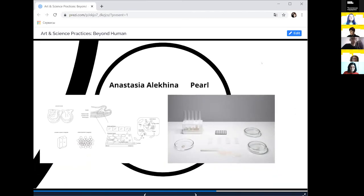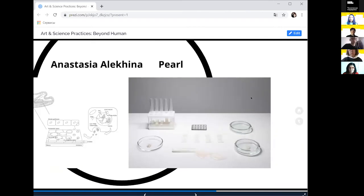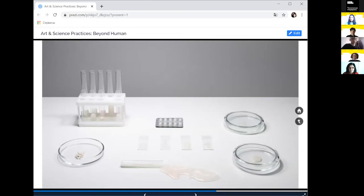The next project is also questioning our understanding how human body can look like. This project is a project by Anastasia Alokina, Paul. This project artist is speculating around the modification of human DNA, which could color the ejaculate.